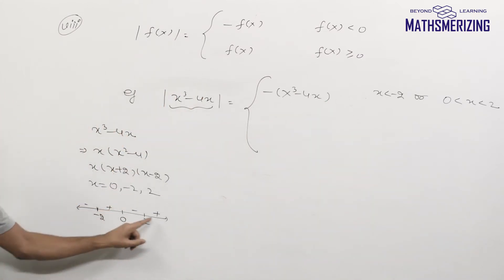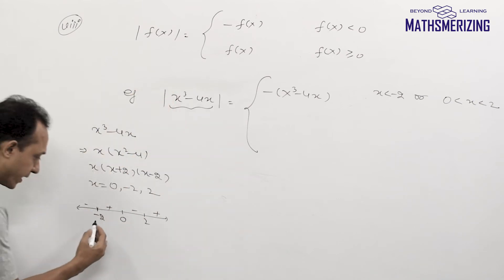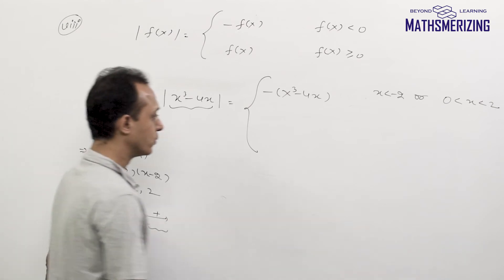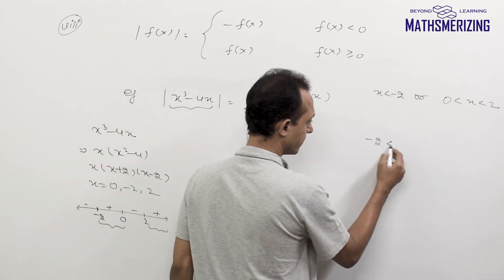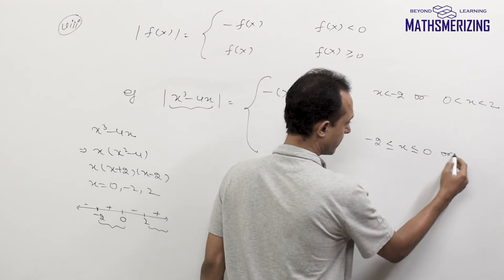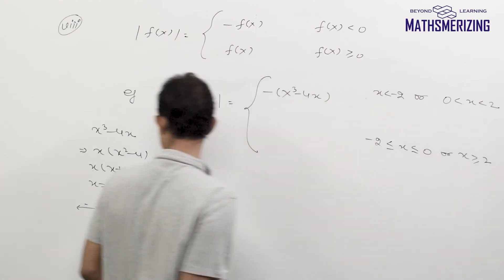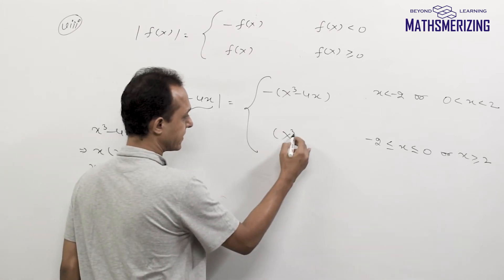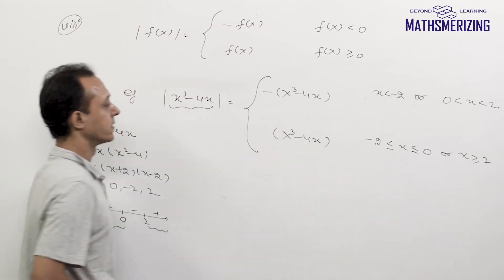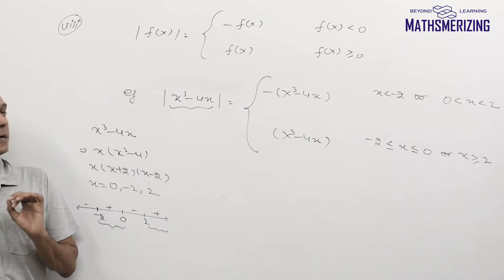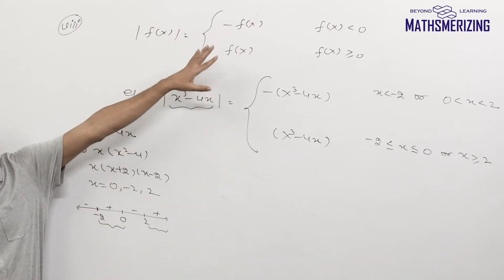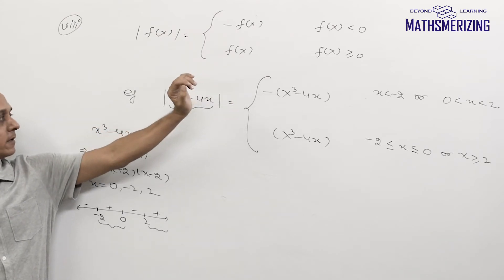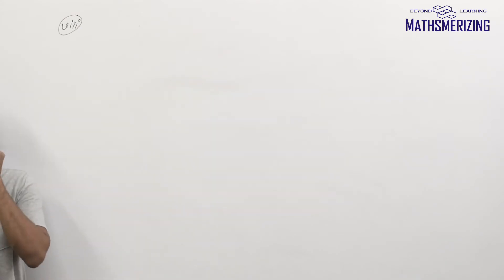Now when f(x) is positive, it is simply f(x). That means when x is between minus 2 and 0, or when x is greater than 2, the expression has a positive sign, so I write plus x cubed minus 4x. So if I have to write mod of f(x), I will write it as minus f(x) when f(x) is negative and plus f(x) when f(x) is positive.